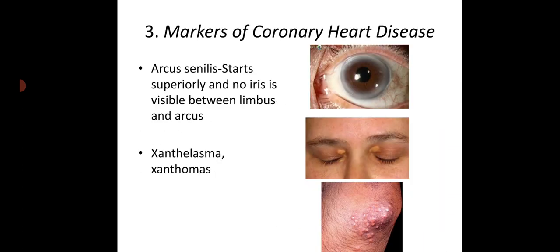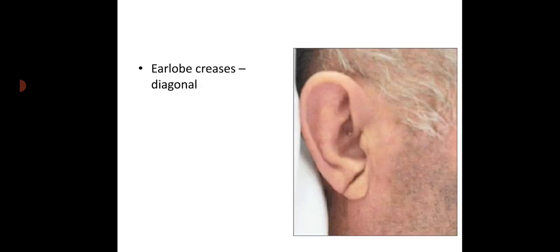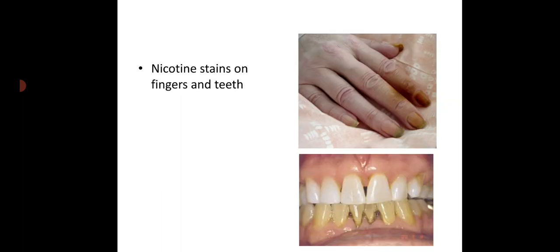Then, markers of coronary heart disease: arcus senilis — arcus senilis starts superiorly and no iris is visible between the limbus and arcus. Then xanthomas, xanthelasmas. Then diagonal earlobe crease. Then nicotine stains, which are signs of smoking and tobacco use.